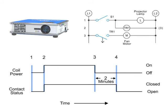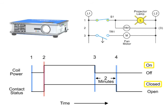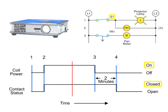Let's look at a common application of a normally open, timed open relay in the operation of a video projector. In this circuit, closing switch S1 turns on the projector bulb and activates timer coil TR1. With timer TR1 energized, normally open contact TR1 immediately closes, energizing the fan motor which controls the cooling of the projector. The projector bulb and the cooling fan remain on as long as switch S1 stays closed.